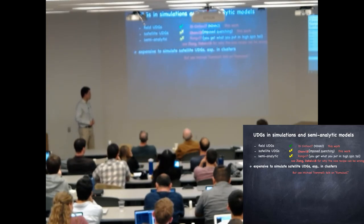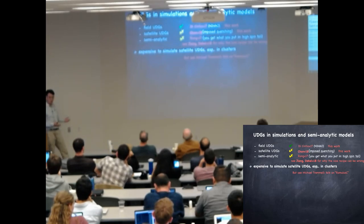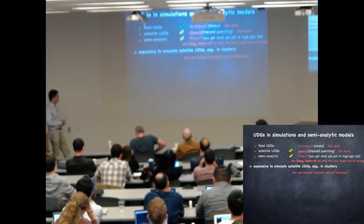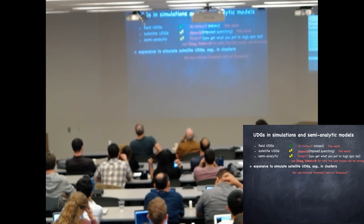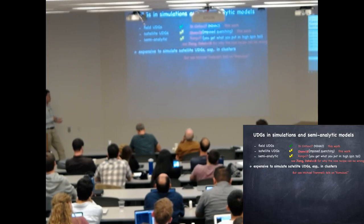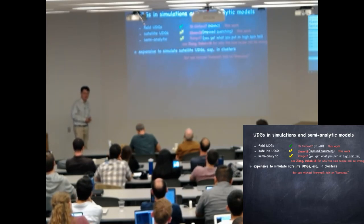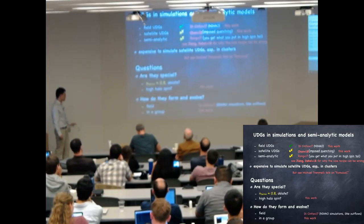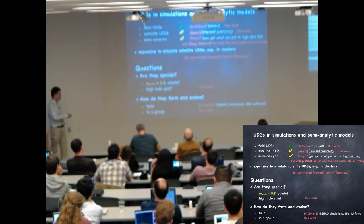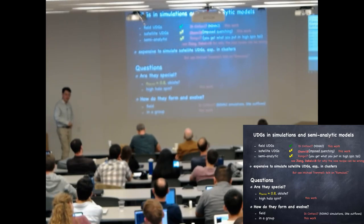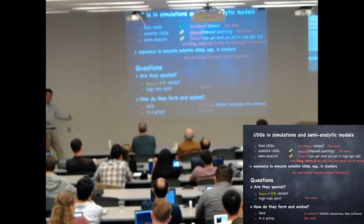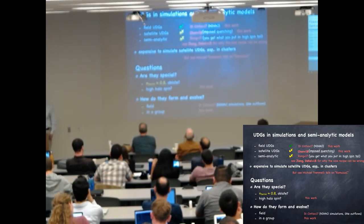We have a recent paper discussing why the size recipe widely used in semi-analytic models may be wrong. The simple explanation for theoretical work lagging behind observations is that it is simply expensive to simulate satellite ultra diffuse galaxies. I'm excited to see Mike Trammell talk about the Romulo-C simulation, which may potentially be an ideal sample for studying UDGs. In this work we use the NIHAO simulation and also a simulation of a galaxy group to answer questions: are UDGs special, are they oblate in morphology, are they high-spin-tail galaxies, and how do UDGs form?